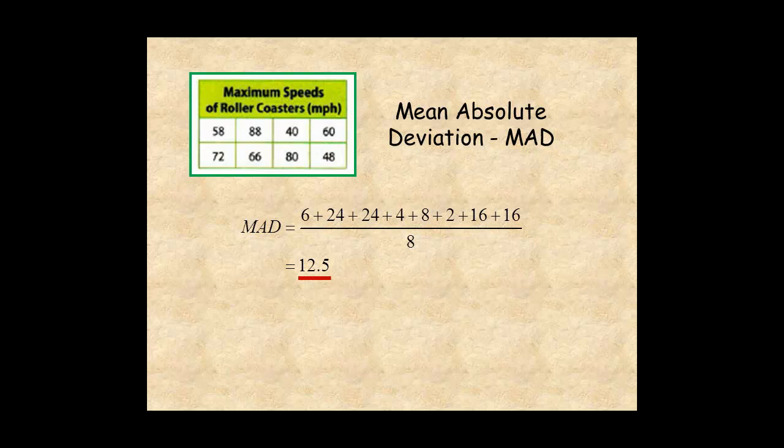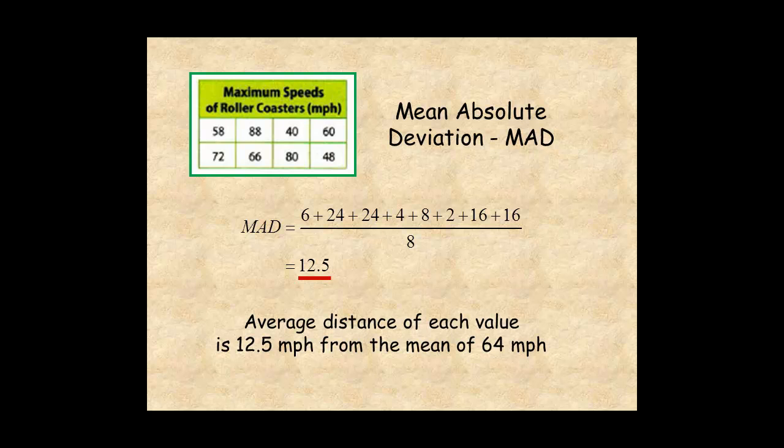This means that the average distance of each value is 12.5 miles per hour from the mean of 64.